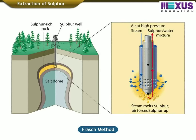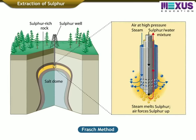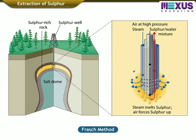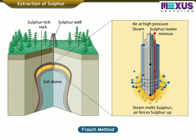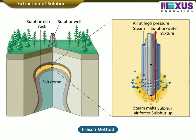Sulphur is extracted directly from the earth's surface by the Frasch method. It is based on the principle of the low melting point of Sulphur.